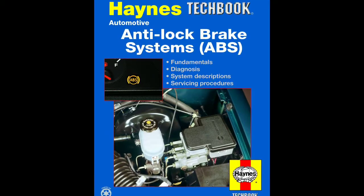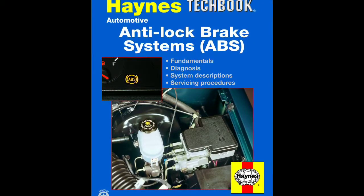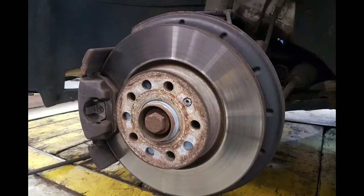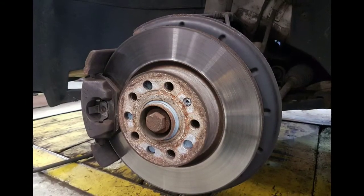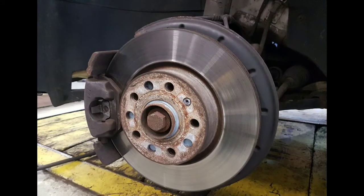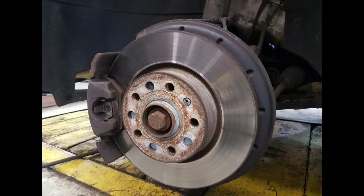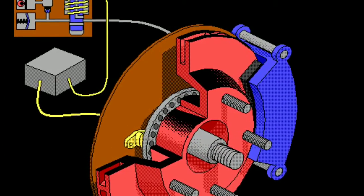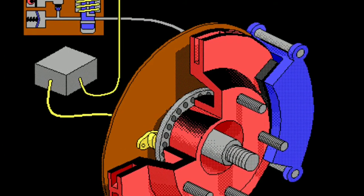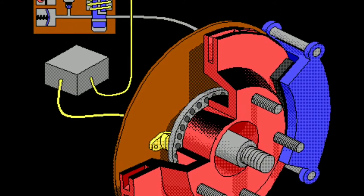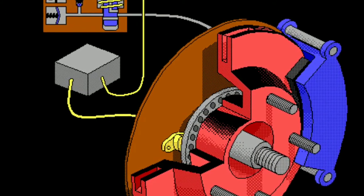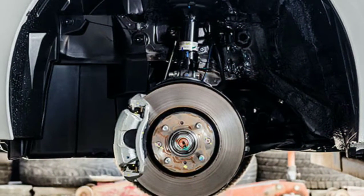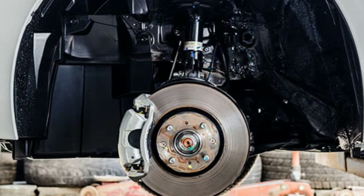The main purpose of the ABS brake system is to prevent hydraulic brakes from locking the vehicle wheels. Whatever your vehicle load, road conditions, and speed, it monitors the number of revolutions of the wheels, prevents slipping, and provides the driver with steering control. It should not be forgotten that the braking distance will increase when ABS is activated. However, it is more beneficial in terms of providing steering control during braking.